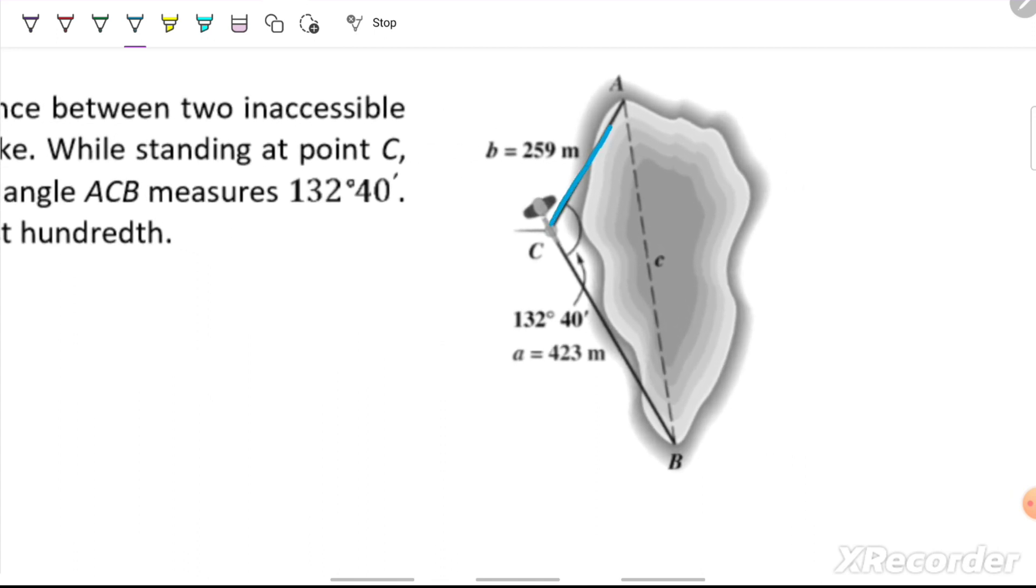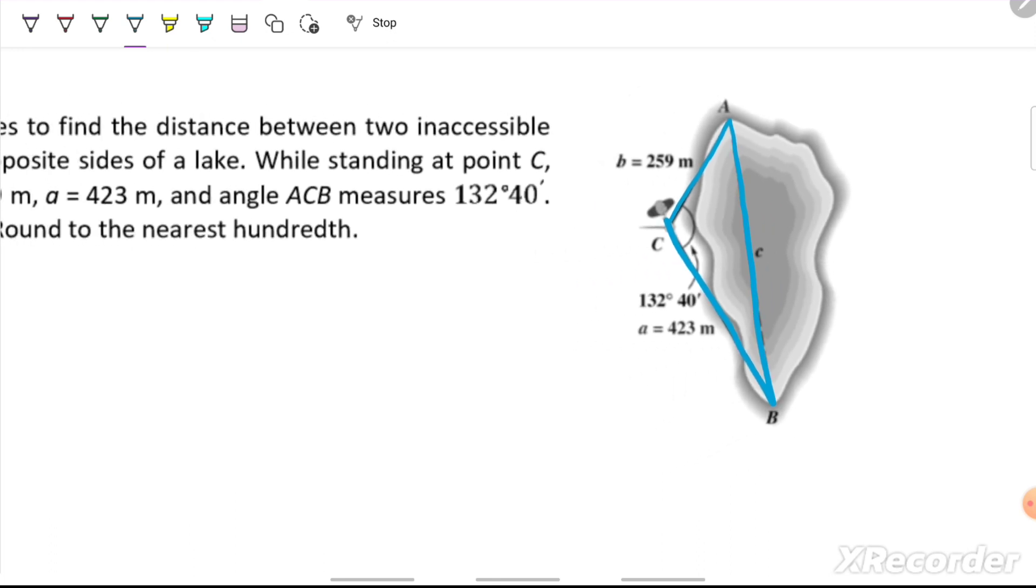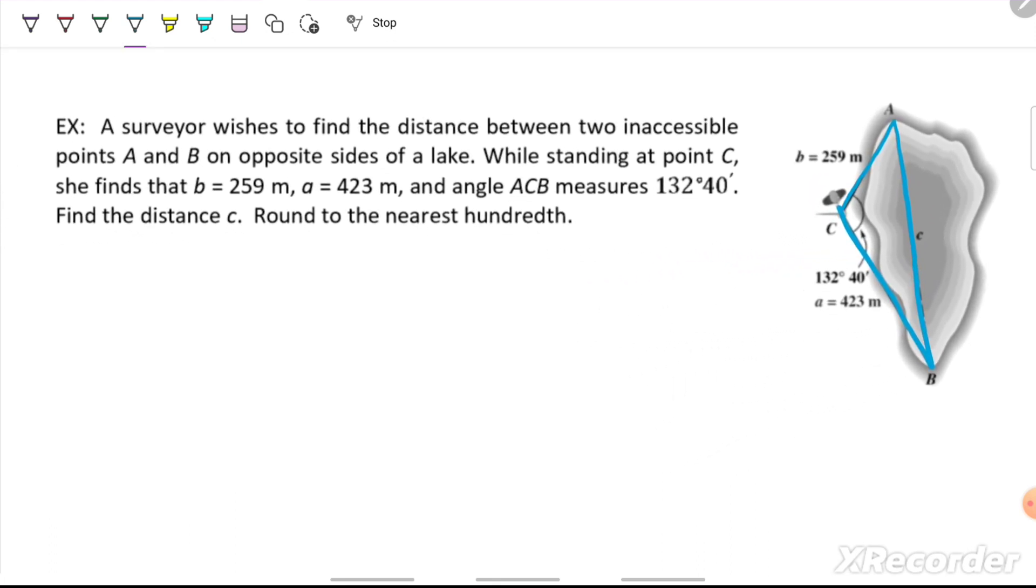Okay, so looking at our triangle here, we know two sides. We're trying to find the third side, and we know one of the angles. We don't have a known pair, so law of sines is not applicable. We're going to use law of cosines. When writing out law of cosines, we always start with the side that is opposite the angle we either know or are trying to find. So our law of cosines equation is going to be C squared equals 259 squared plus 423 squared minus 2 times 259 times 423 times cosines of 132 degrees, 40 minutes.